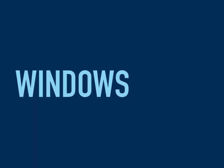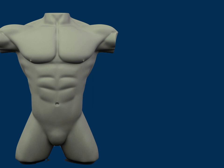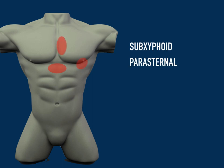There are different windows in which we are going to place our probe to obtain images of the heart. Mainly there are three from a point-of-care ultrasound point of view. These three windows are the sub-xiphoid window, the parasternal window, and the apical window.